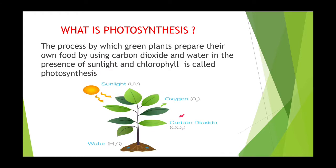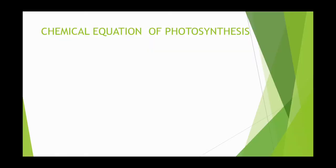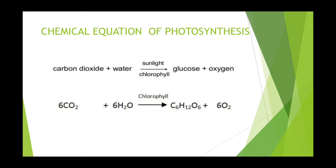This process can be represented in the form of a chemical equation: carbon dioxide plus water, in the presence of sunlight and chlorophyll, gives glucose plus oxygen. This can be seen in the form of a formula: 6CO2 plus 6H2O, in the presence of sunlight and chlorophyll, gives the product C6H12O6 plus 6 molecules of oxygen.